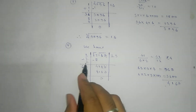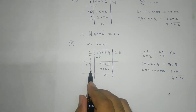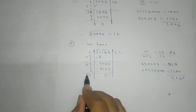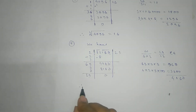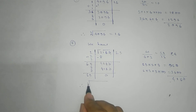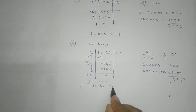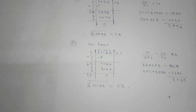And here we are getting 0. If you wish you can add — no problem. So here we are getting 9 and 6. Therefore our answer is: cube root of 12167 is 23.